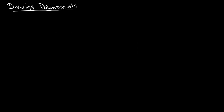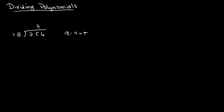As a quick recap of what long division is, I'll go over an example. Let's say that we have 756 divided by 18. The way that we go about this is we first divide 75 by 18, and this gives us a value of 4, because 18 times 4 is 72, and that's the closest factor to 75.